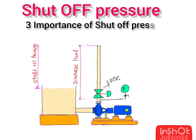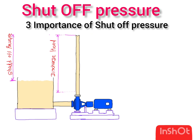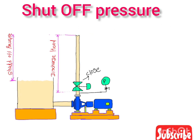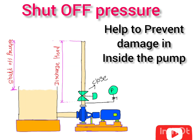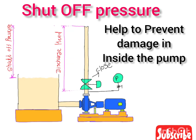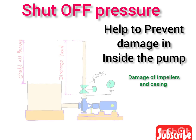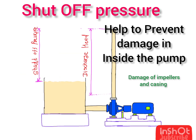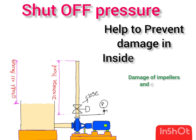Now let's talk about the importance of shut-off pressure. The first benefit is that it helps to prevent damage to the pump. If we close the valve suddenly, pressure increases, and this increase in pressure may damage the inside components of the pump like the impeller and casing. But if you know the shut-off pressure, it can help you design safeguards to prevent this damage inside the pump.